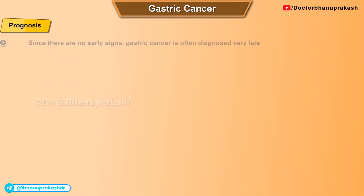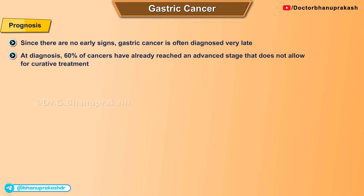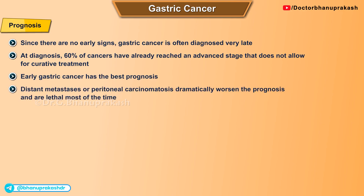Since there are no early signs, gastric cancer is often diagnosed very late. At diagnosis, 60 percent of cancers have already reached an advanced stage that does not allow for curative treatment. Early gastric cancer has the best prognosis, while distant metastases or peritoneal carcinomatosis dramatically worsen the prognosis and are lethal most of the time.